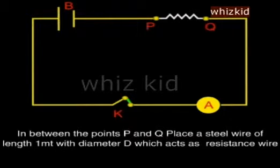In between the points P and Q, place a steel wire of length 1 meter with diameter D, which acts as resistance wire.